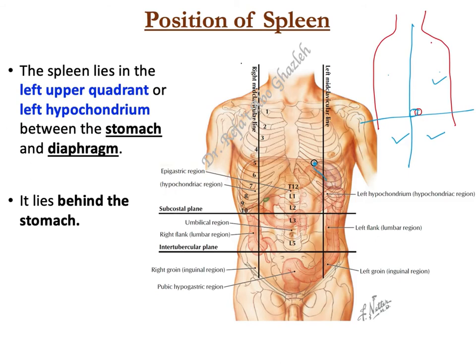When we talk about the position of the spleen, if you look at the shadow of the spleen in the nine-division system, it's located in the left hypochondrium. This is the left hypochondrium. If you divide the abdomen into four divisions, with the umbilicus as reference, it is in the left upper quadrant.